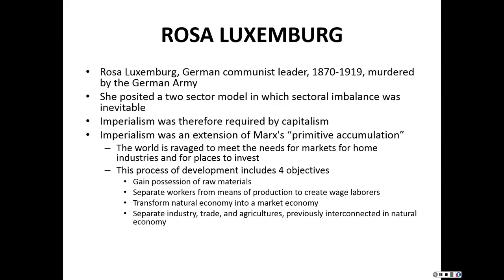Rosa Luxemburg was a second writer in this tradition, and she was murdered by the German Free Corps in 1919 during an effort at revolution in Germany by the Spartacist League. In her model, she thought about the world as a two-sector model where sectoral imbalance was inevitable, so imperialism is therefore required by capitalism. She thought imperialism was really an extension of Marx's idea of primitive accumulation — where things like the slave trade and the robbing of the so-called new world of gold created the original accumulations needed to launch capitalism — and that imperialism was simply an extension of that process where the world is ravaged to meet the needs for markets for home industries and for places to invest.